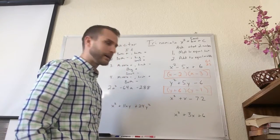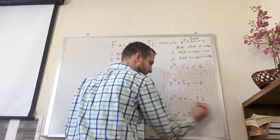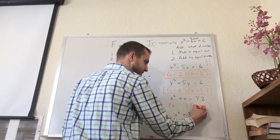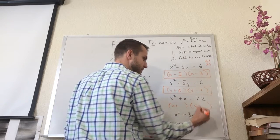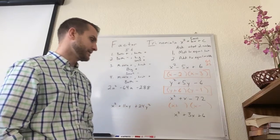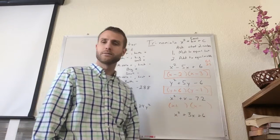Next, I have x squared plus x minus 72. So again, start off with parentheses. I'm using x this time, so I'm going to put x at the beginning. The middle is positive. The last is negative, so I know the bigger number is positive and the smaller number is going to be negative.